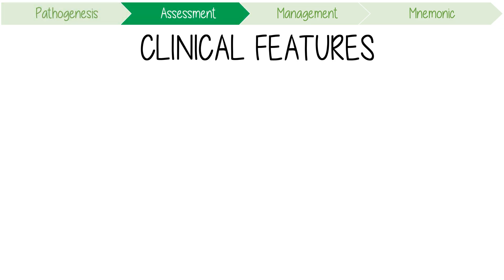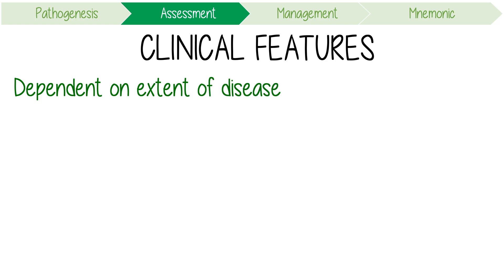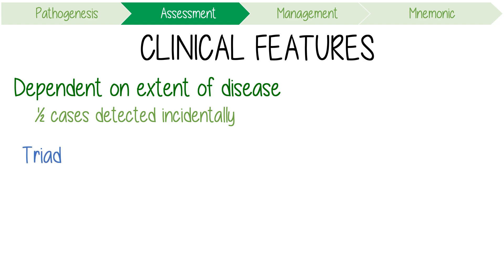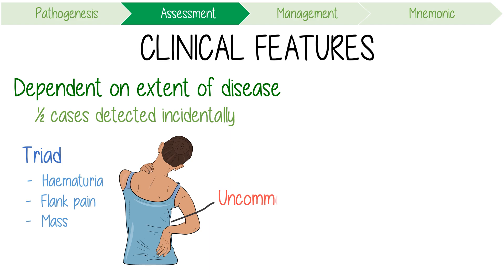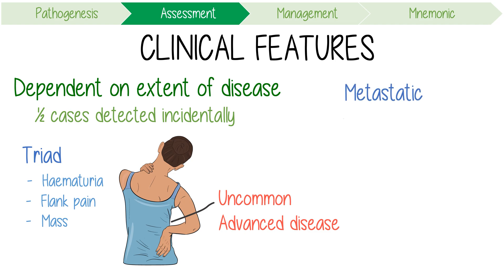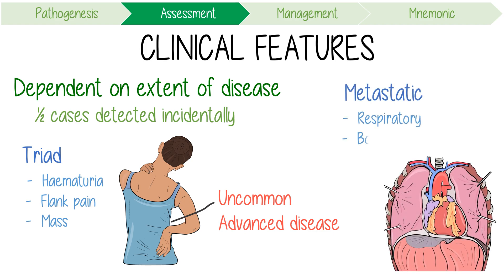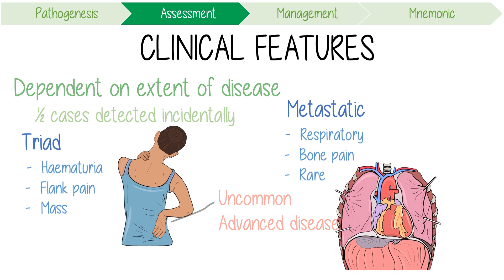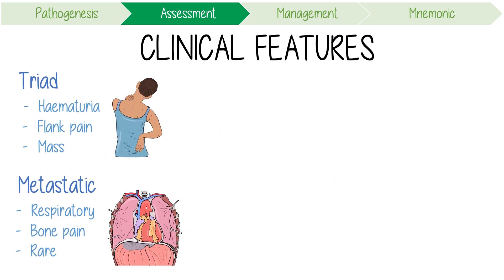The clinical features of renal cell carcinoma are dependent on the extent of disease, with one half of cases detected incidentally in asymptomatic patients. The classic triad of hematuria, flank pain, and abdominal mass is uncommon and indicative of aggressive advanced disease. Similarly, presentations with symptoms of metastatic disease such as respiratory symptoms or bone pain is rare.